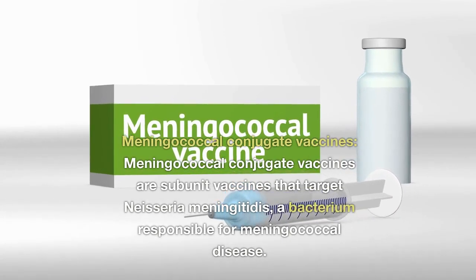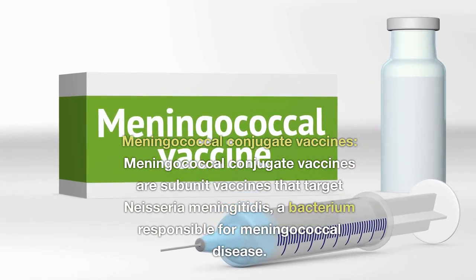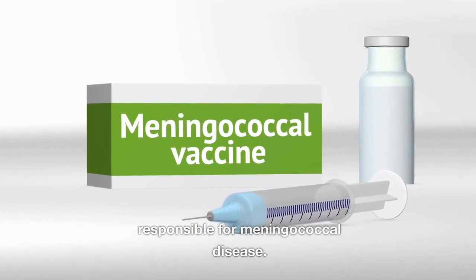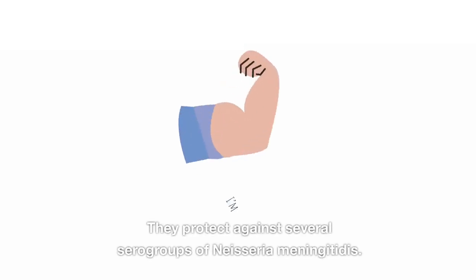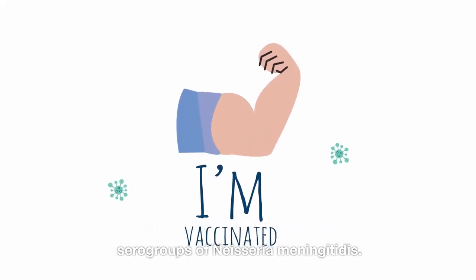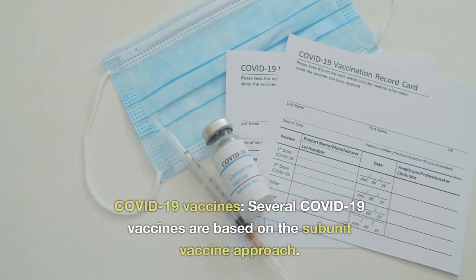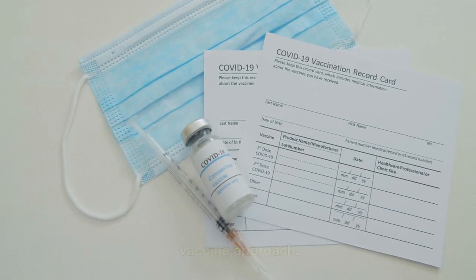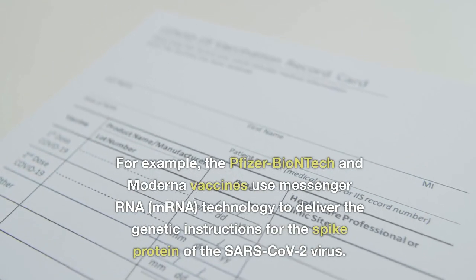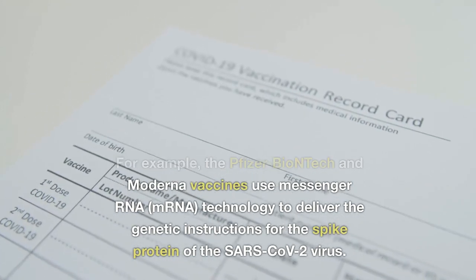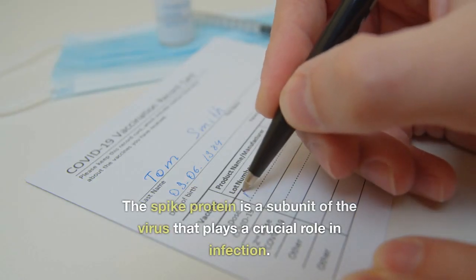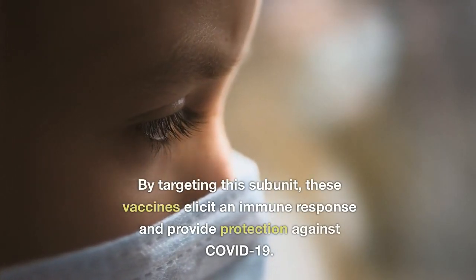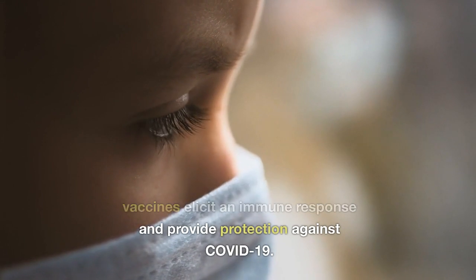Meningococcal conjugate vaccines. Meningococcal conjugate vaccines are subunit vaccines that target Neisseria meningitidis, a bacterium responsible for meningococcal disease. These vaccines use specific polysaccharides from the bacterium, which are conjugated — attached — to carrier proteins to enhance the immune response. They protect against several serogroups of Neisseria meningitidis. COVID-19 vaccines. Several COVID-19 vaccines are based on the subunit vaccine approach. For example, the Pfizer-BioNTech and Moderna vaccines use messenger RNA, mRNA technology to deliver the genetic instructions for the spike protein of the SARS-CoV-2 virus. The spike protein is a subunit of the virus that plays a crucial role in infection. By targeting this subunit, these vaccines elicit an immune response and provide protection against COVID-19.